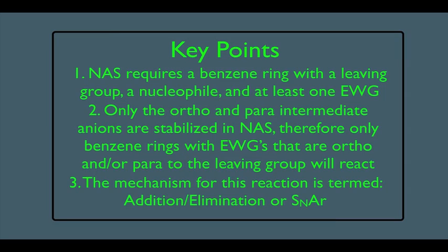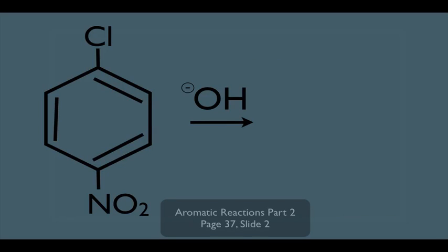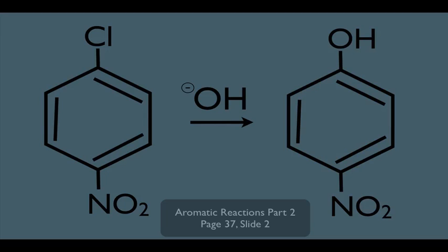We'll see why it's called that in a few minutes. But first, let's look at our overall reaction. The product for this reaction is this molecule right here. Notice what's unique about this reaction. What we've learned previously is electrophilic aromatic substitution, which involves adding electrophiles to a benzene ring. Now we're adding a nucleophile, so this is definitely not electrophilic aromatic substitution — it must be a different reaction with a different mechanism.